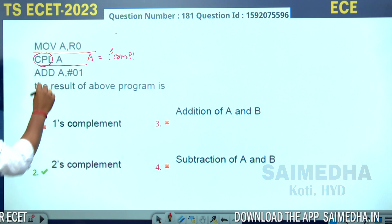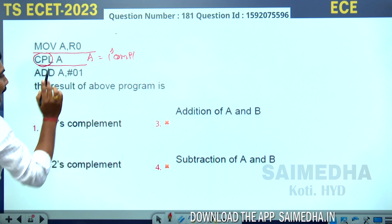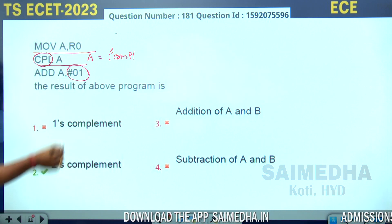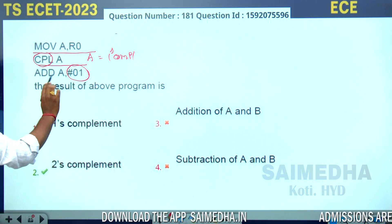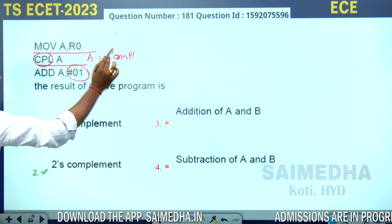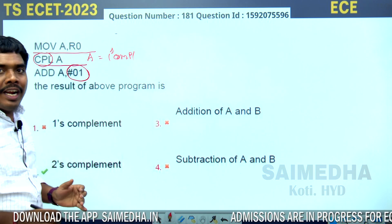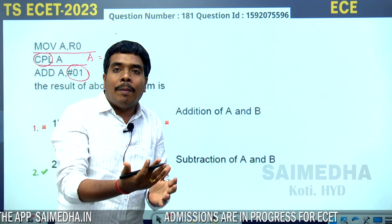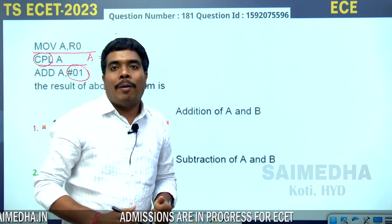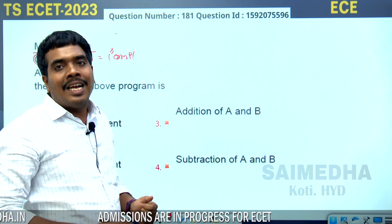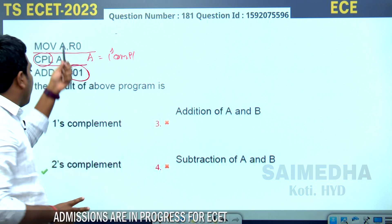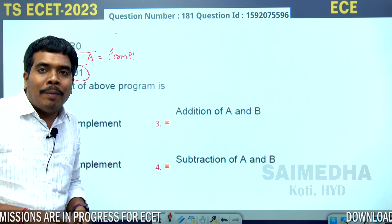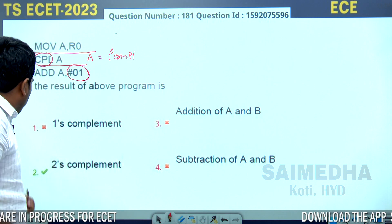In the next instruction, ADD A, H0, 1 — here H0,1 means immediate data. Adding 1 to the 1's complement results in the 2's complement. The final result of the program executed is in the 2's complement.